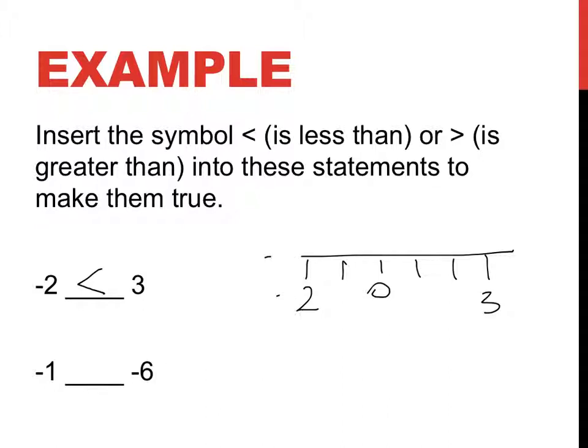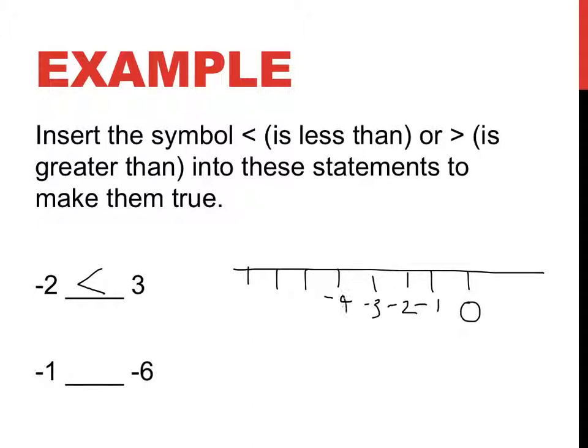Now, this is the tricky bit. This is where it gets a little bit tricky sometimes. Is negative 1 greater than or less than negative 6? Now, with positive numbers, 1 would be less than 6. But when you think about it, negatives actually go the other way. So I'm going to start 0 here. Negative 1, negative 2, negative 3, negative 4, negative 5, negative 6.